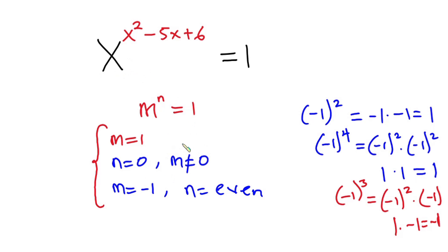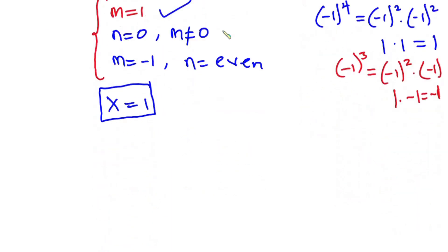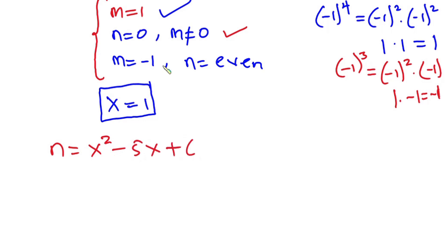So going through all the cases to find the possible solutions: from the first case, m equals 1 means x equals 1, and that is one possible solution. Now for the second case, n is equal to 0 and m is not equal to 0. Here n is x squared minus 5x plus 6, and we set it equal to 0. So we have x squared minus 5x plus 6 equals 0.